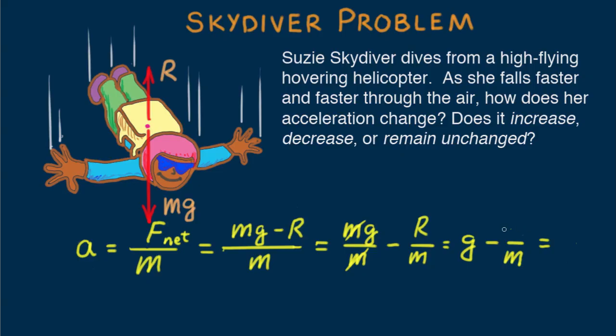Note that if R builds up to equal her weight, mg, then acceleration reduces to zero. Chew on that?